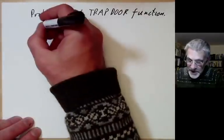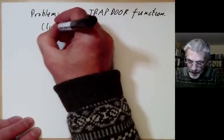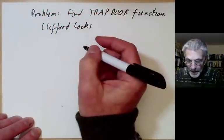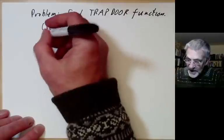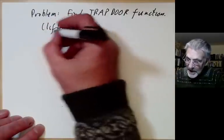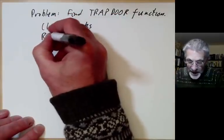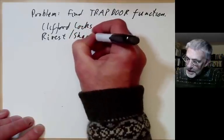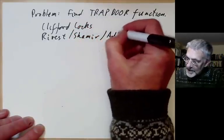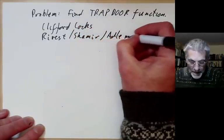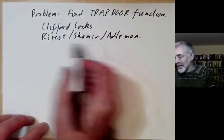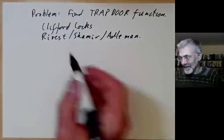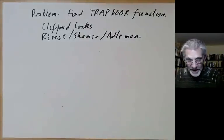The first solution to finding a trapdoor function was found by Clifford Cocks, who didn't publish it for various reasons. It was later rediscovered by Rivest, Shamir, and Adleman, and is now known as the RSA method.